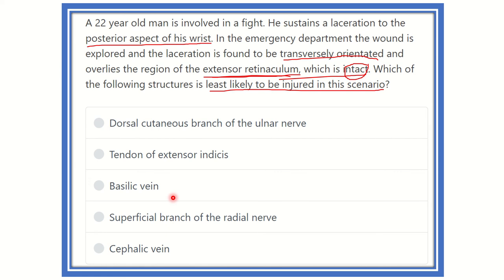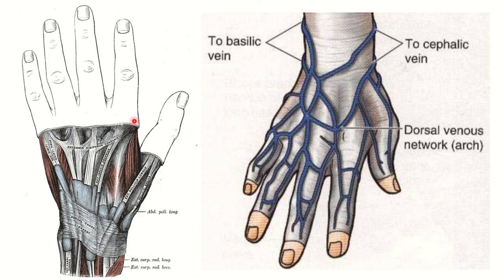Looking at the wrist anatomy, the extensor retinaculum lies at the wrist. The deep structures — the tendons — lie beneath it. We can see extensor pollicis brevis, extensor pollicis longus, extensor indicis, extensor digitorum, and other tendons, all running below the extensor retinaculum in the dorsal view. If the retinaculum is intact, these tendons will not be injured.